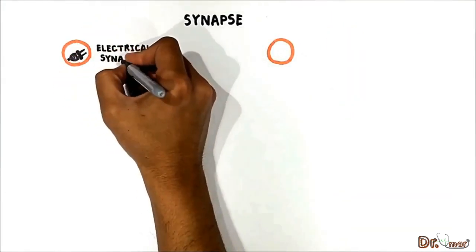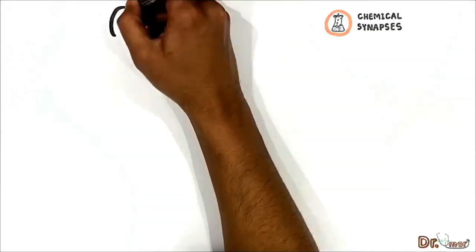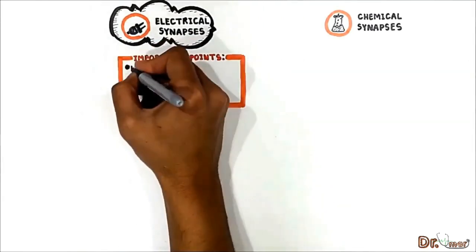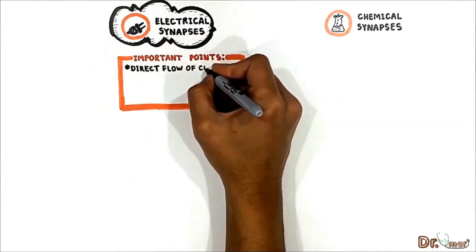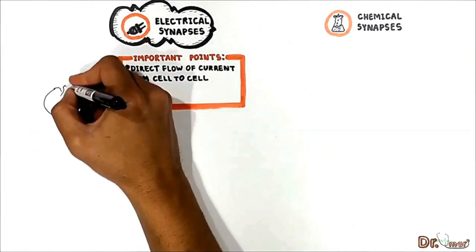Electrical synapse and chemical synapse. First let's talk about electrical synapse. In this type of synapse there is a direct flow of current from cell to cell through the gap junctions.